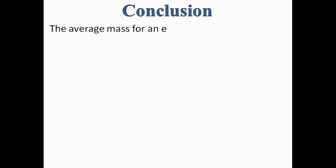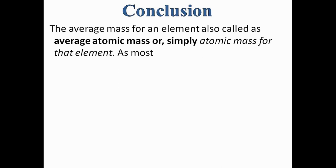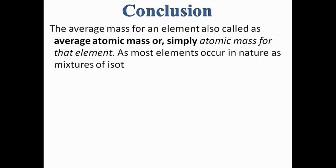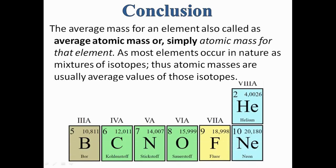In conclusion, the average mass of an element, also called the average atomic mass or simply atomic mass, is used for that element. Since most elements occur in nature as mixtures of isotopes, atomic masses are usually average values of those isotopes. Here are a few other examples from the periodic table.